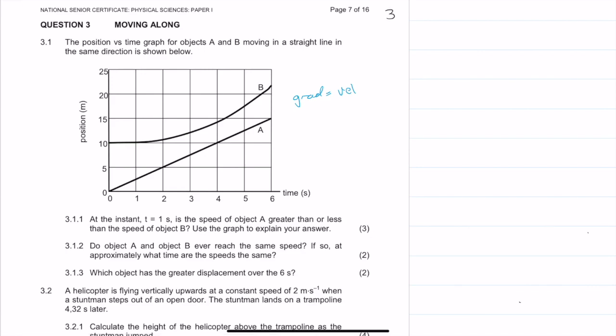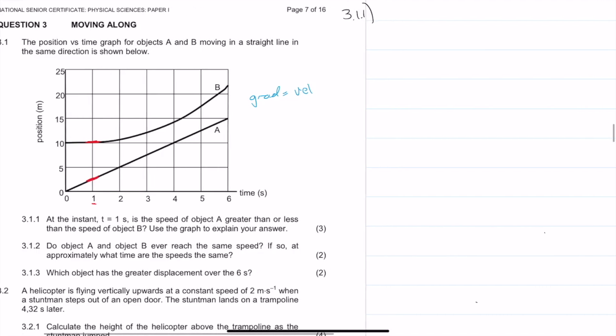Question 3.1.1 says at the instant t equals 1 s, is the speed of object A greater than or less than the speed of object B? So once again we're looking at the gradients. We go to time equals 1 second and we look at the gradients. If we compare the gradient of A and the gradient of B, the gradient of B is pretty much flat, so it's pretty much zero, while the gradient of A is quite steep. Therefore, we can say that the speed of A is greater than the speed of B.